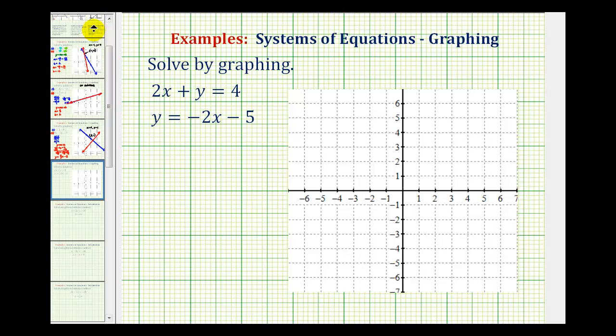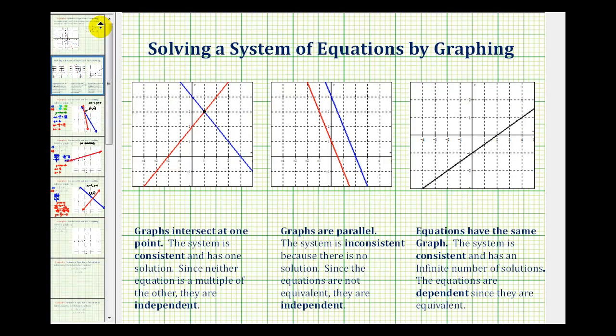When we graph two lines on the same coordinate plane, there are three possible outcomes. If the two lines intersect in one point, as we see here, that means there's one solution, and the solution would be the coordinates of the point of intersection. This type of system is classified as being consistent, and the equations are independent.